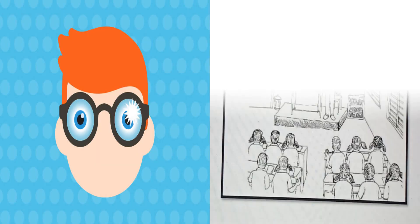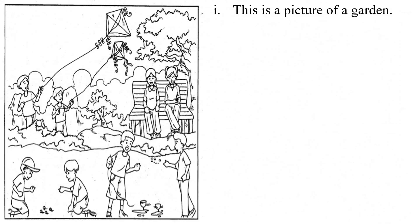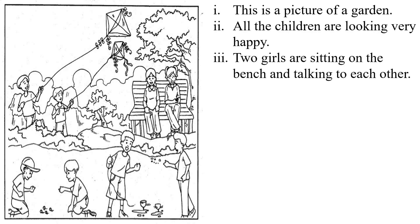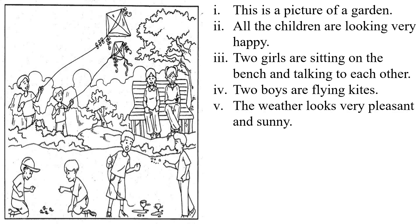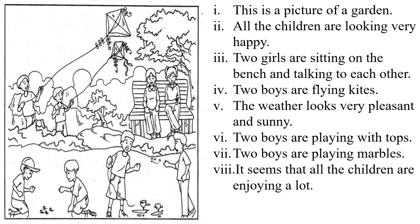Now, see the second picture of revision 12. Let's describe it. This is a picture of a garden. All the children are looking very happy. Two girls are sitting on the bench and talking to each other. Two boys are flying kites. The weather looks very pleasant and sunny. Two boys are playing with tops. Two boys are playing marbles. It seems that all the children are enjoying a lot.